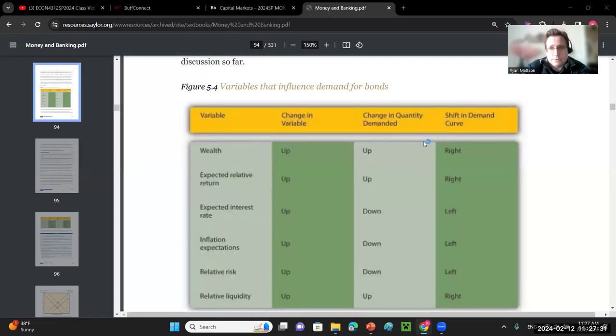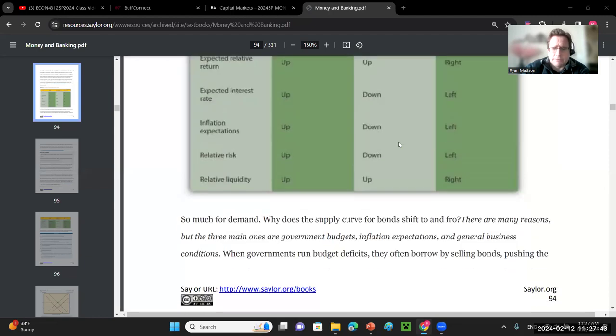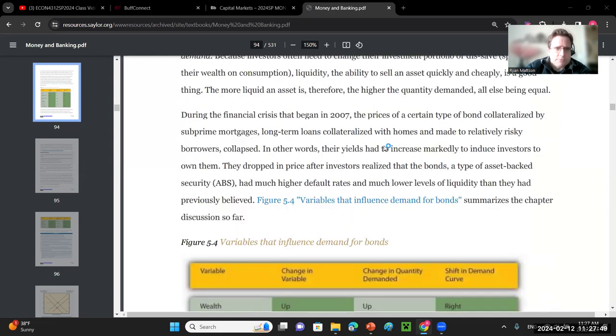Hello, Econ4312. In the previous videos, we talked about interest rates and present value. We want to move away from the financial world and back into the economics world to talk about quantity supply and demand for bond markets and shifts in demand. I'm pulling my bond pricing material from the Money in Banking Open Access textbook linked on Blackboard.